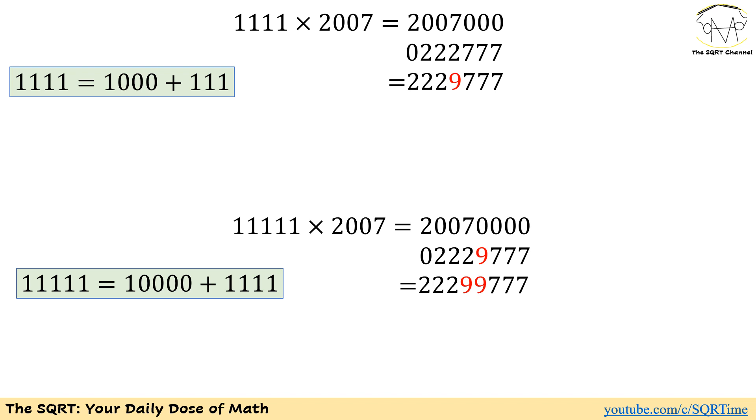If we do this for one more item here, you are going to see that basically we are going to have 22299777. That's interesting. The number of 7s and the number of 2s are going to be fixed at this point. We are going to add 9 to the digit.